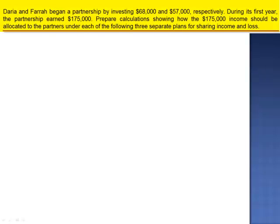Exercise 5. Daria and Farah began a partnership by investing $68,000 and $57,000, respectively. During its first year, the partnership earned $175,000. Prepare calculations showing how the $175,000 income should be allocated to the partners under each of the following three separate plans for sharing income and loss.